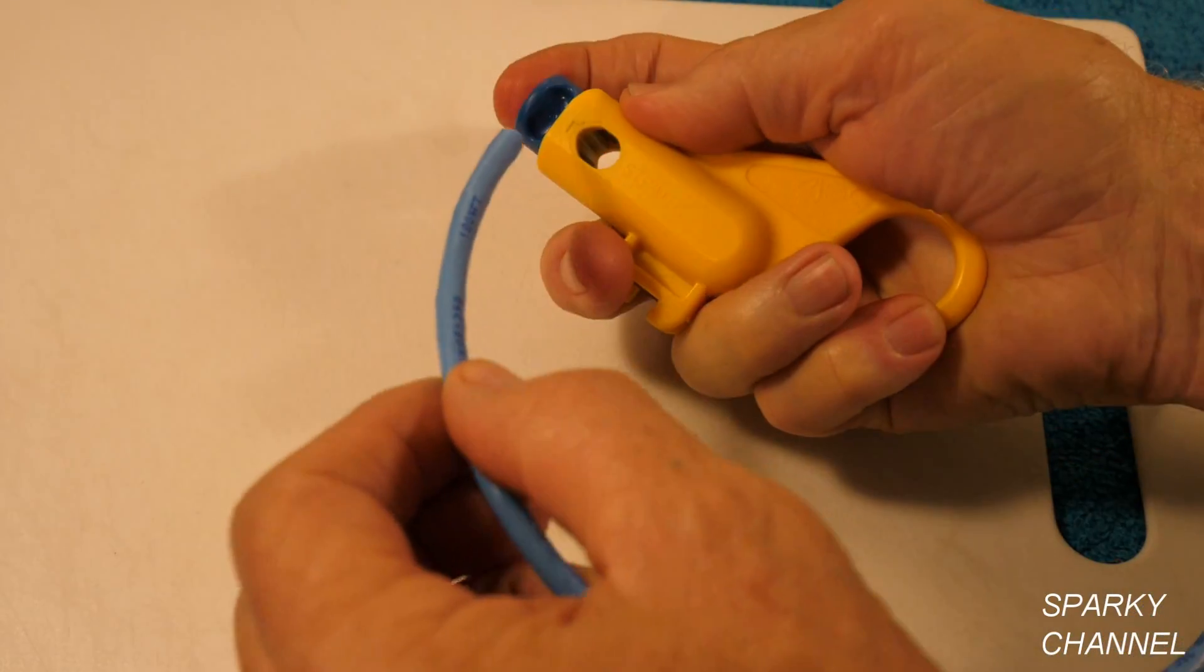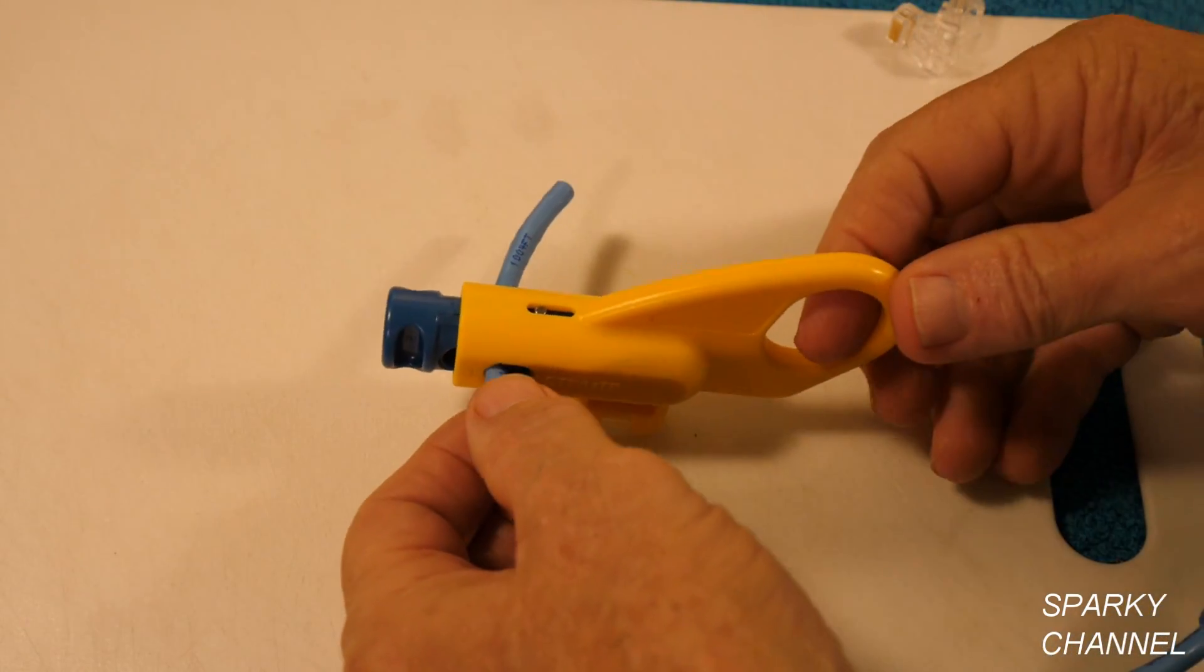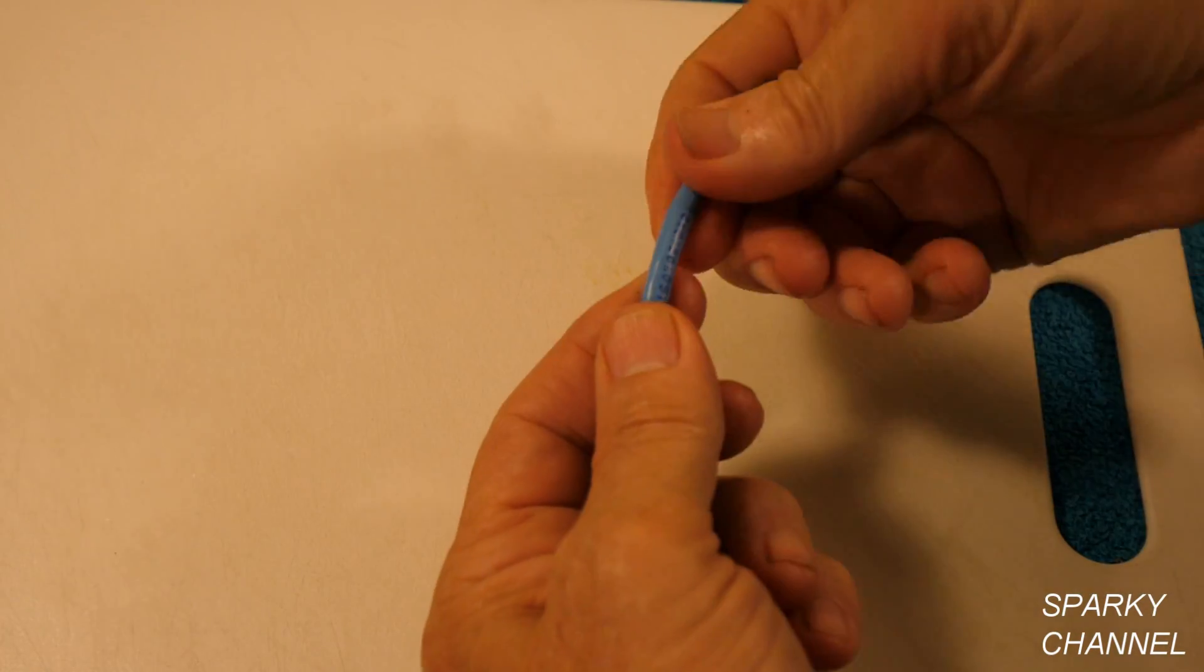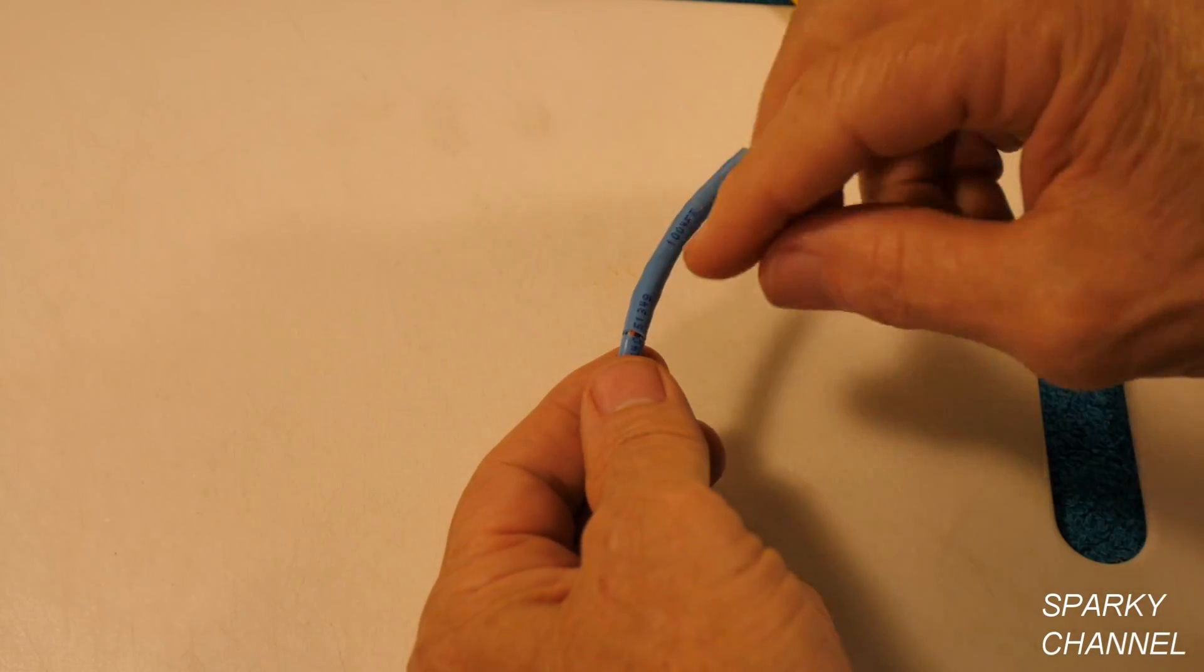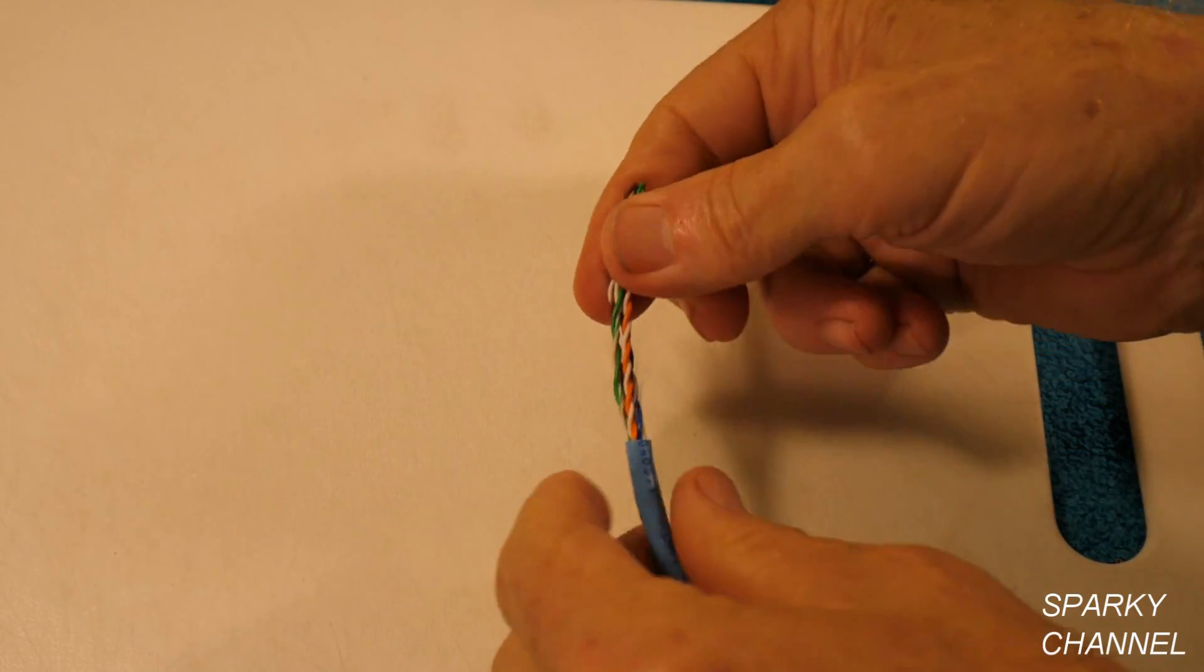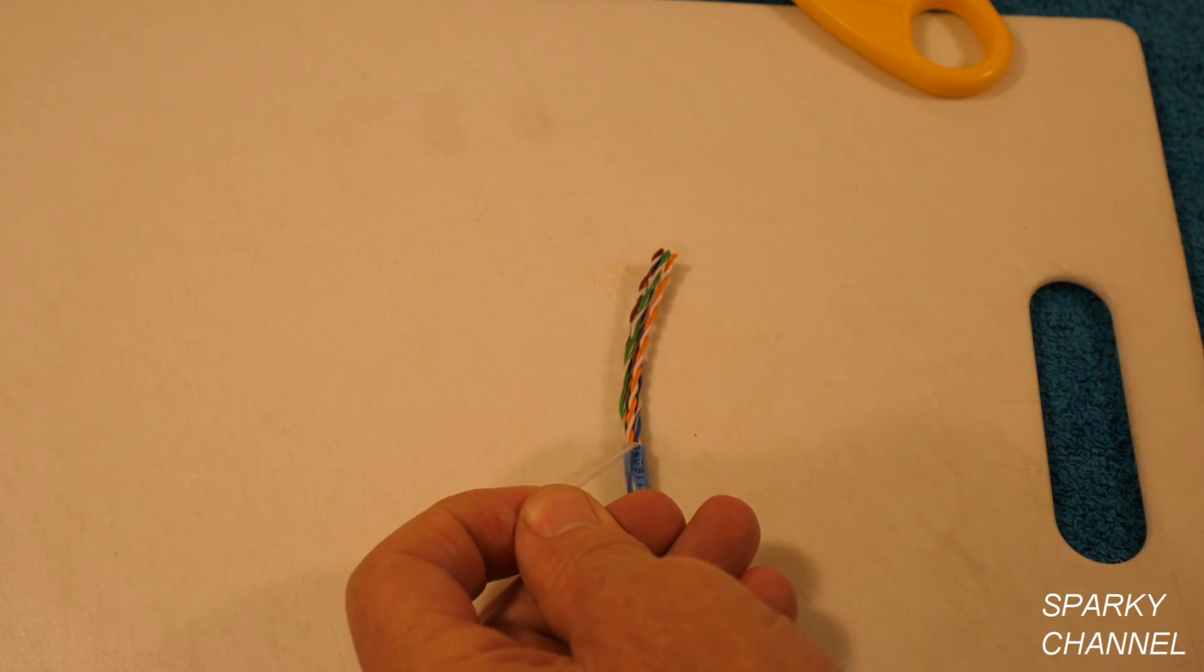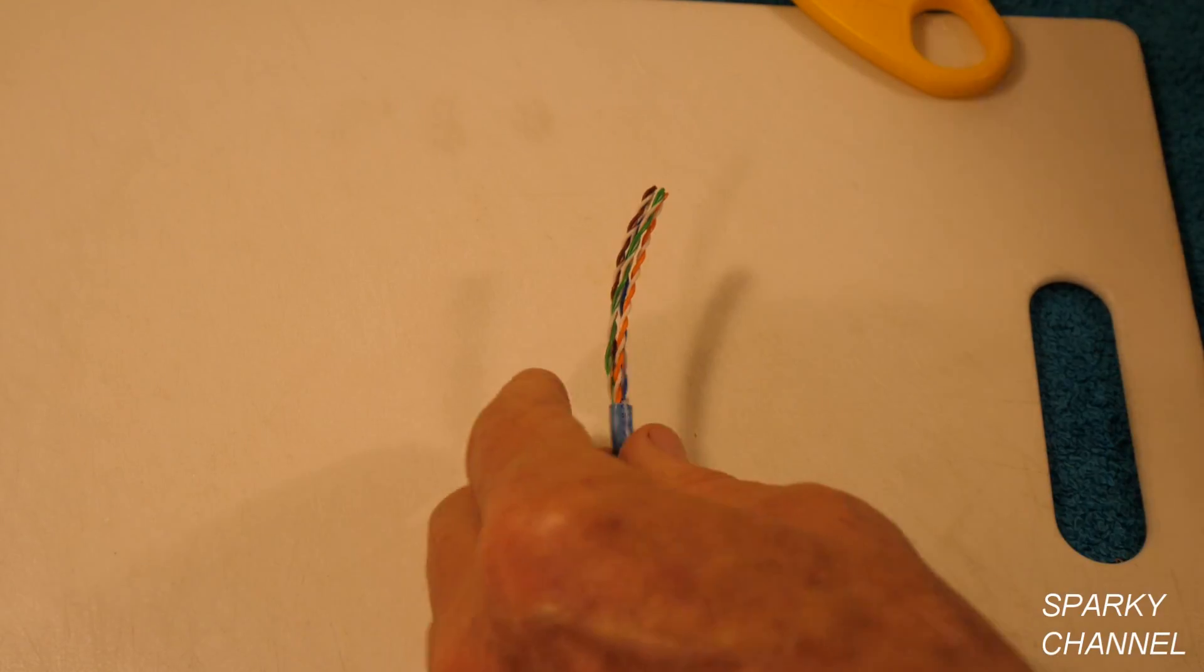So here's a stripper for Ethernet cable. Put your cable right in there, two or three inches. And we're going to go around one time and press the button and pull it out. Now we're going to break the jacket. You break the jacket. That way there's no chance of damaging any of the pairs of wire inside. And inside you'll see four pairs of wire. So this is a pull cord right here. It's actually made of Kevlar. And I'm going to cut it with my electrician scissors like that.